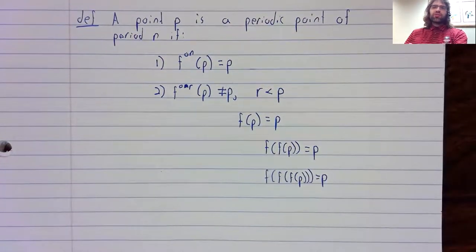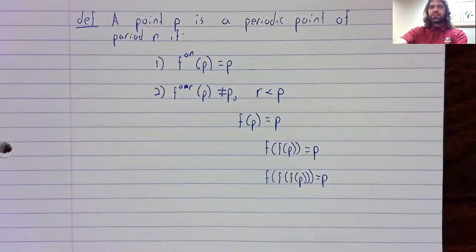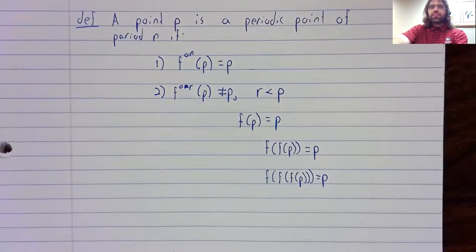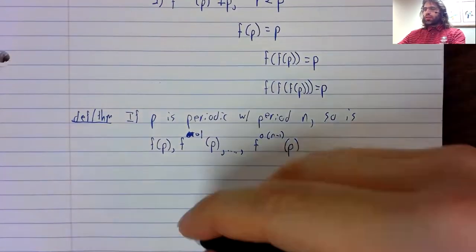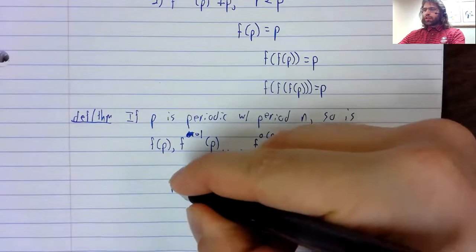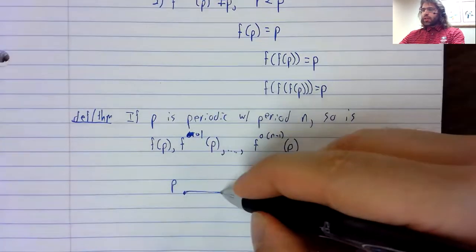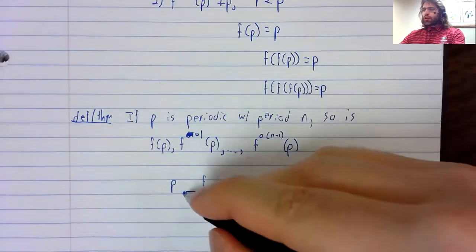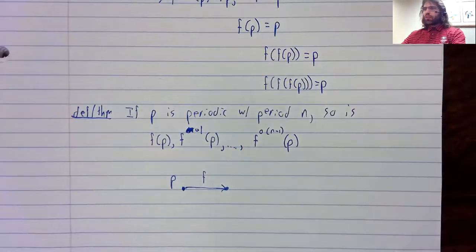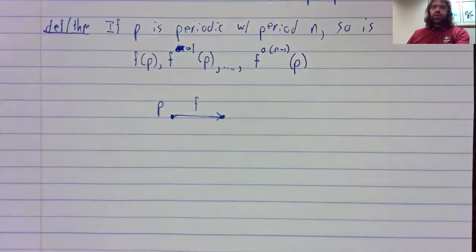Periodic points create periodic orbits. In particular, if you start with a periodic point P and you apply F to it, you get another periodic point. And I'm drawing this in two dimensions just for clarity.